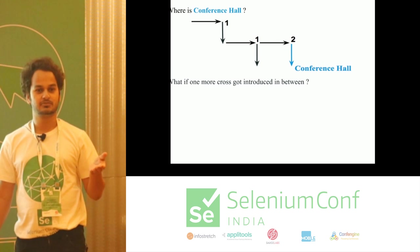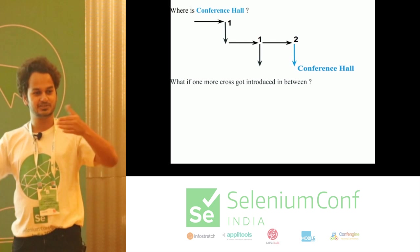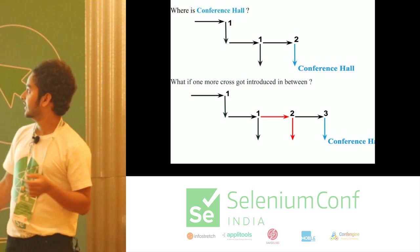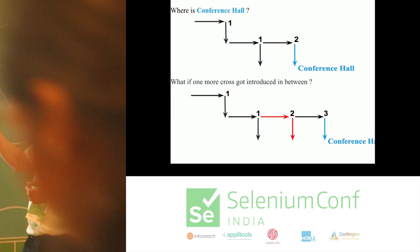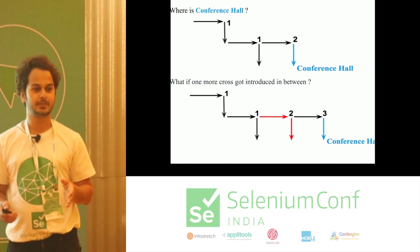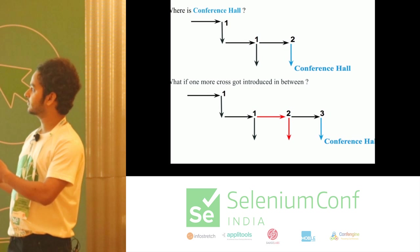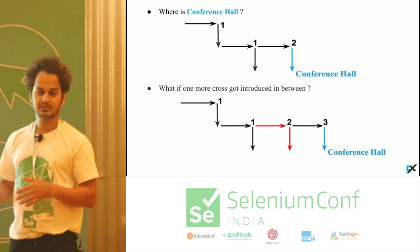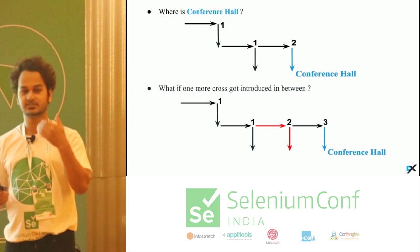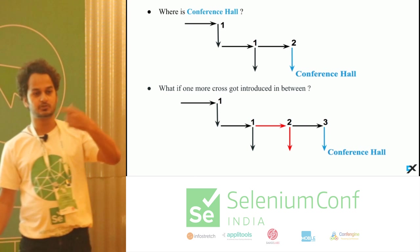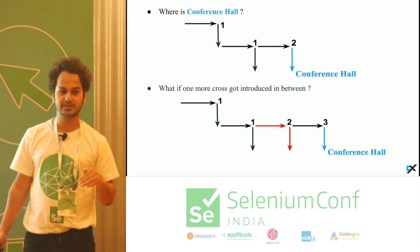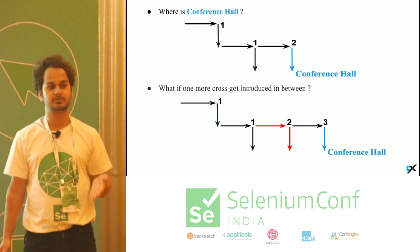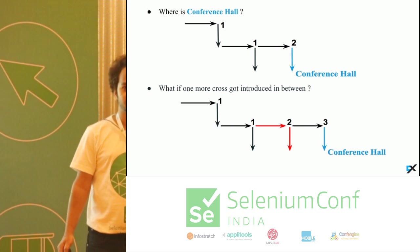But what if next day one more cross has been introduced in between? Now this conference hall will not be on the second cross, it will be on the third cross. So this is like getting the address of any place which is an absolute address, which could change — the probability of changing is very high. In that case, tomorrow I will also have to update my memory, and that guy who helped me will also have to update his database.